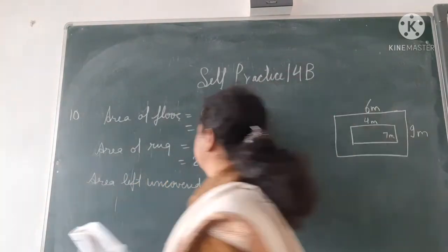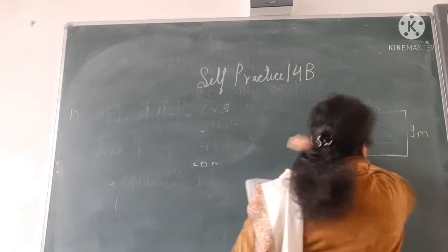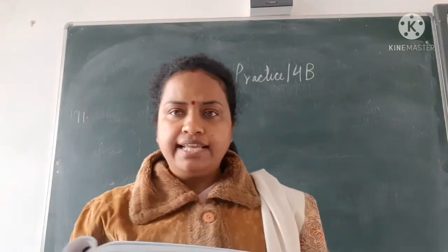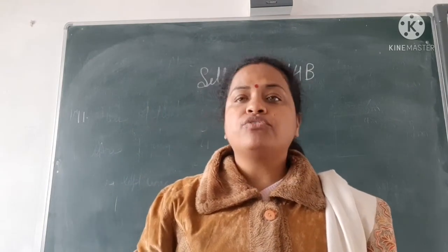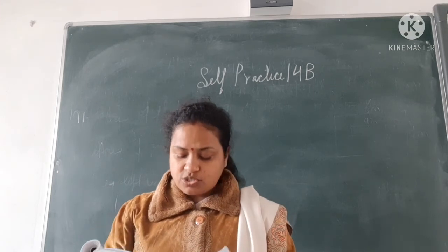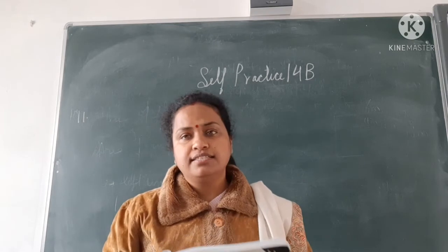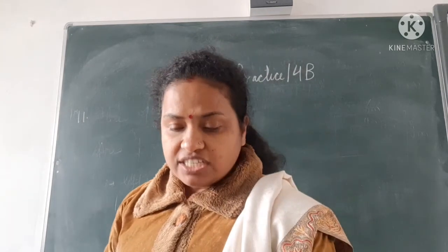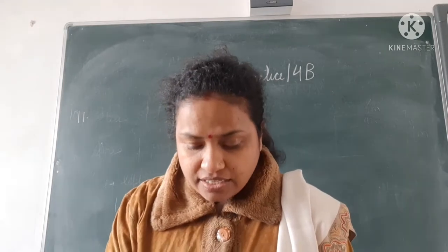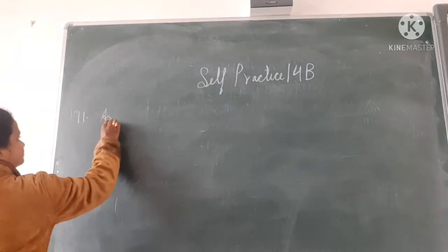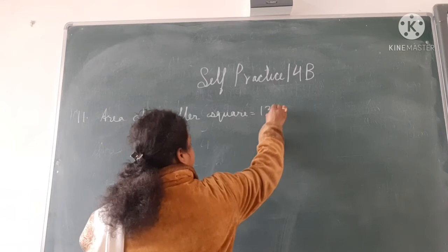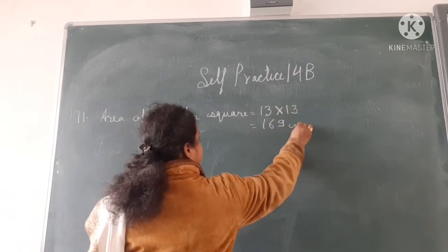Let's do question number 11. The figure is composed of 2 squares. The area of the shaded region is 56 square centimetre. What is the side length of the larger square if the side length of the smaller square is 13 centimetre? You will find area of the smaller square, which is 13 into 13, that is 169 centimetre square.